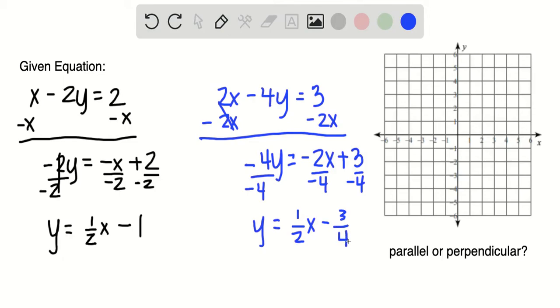Okay, now I'm ready to go ahead and start graphing these. The first one, y is equal to one half x minus 1. My y intercept is negative 1 and my rise over run, or my slope, is rise 1 run 2.